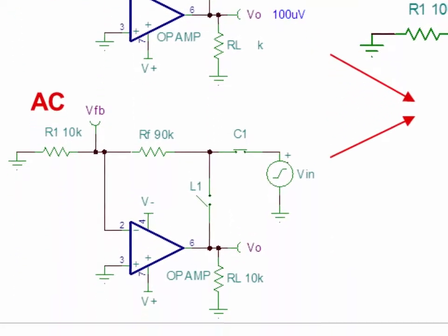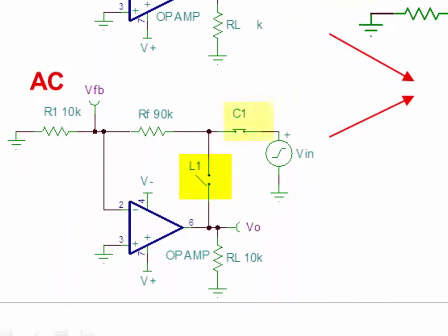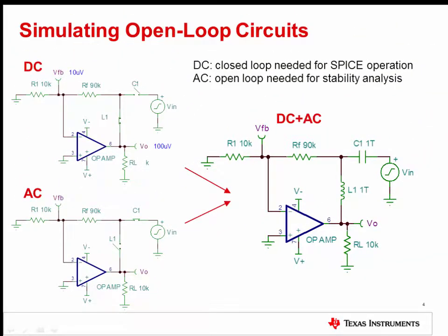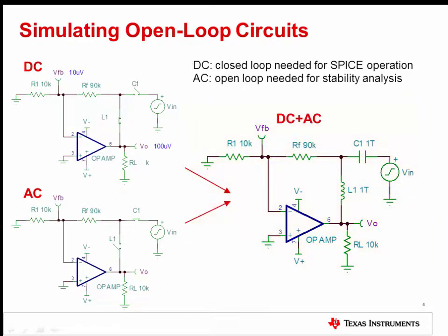The circuit at the bottom left shows the desired AC circuit, where the L1 switch is open and the C1 switch is closed. With the loop open for AC frequencies, the stimulus can be applied to generate the open loop curves. Thankfully, there's a straightforward way to create a circuit that meets both the DC and AC criteria using the ideal properties of SPICE components. Switch L1 is replaced with a 1 tera-Henry inductor, and switch C1 is replaced with a 1 tera-Farad capacitor. At DC, L1 is a short and C1 is an open circuit, providing a proper DC operating point. For all AC frequencies, L1 is an open circuit and C1 is a short, resulting in the proper open loop AC connections.